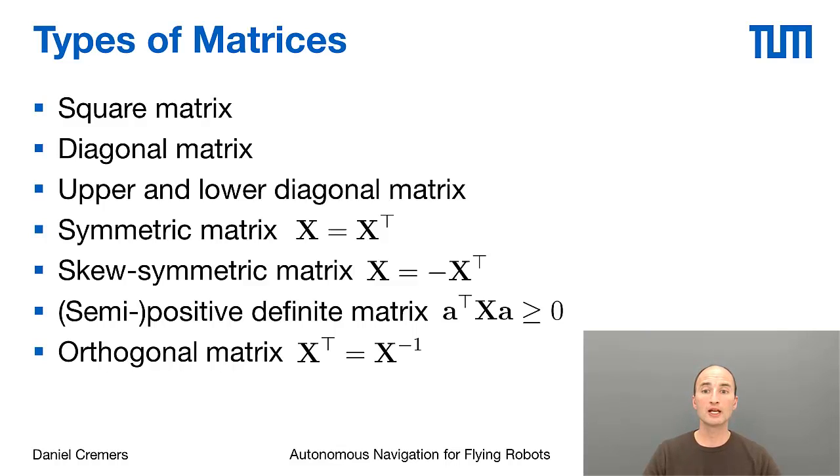Furthermore, we have symmetric matrices. These are matrices where the transpose is equal to the matrix itself. The transpose is obtained by mirroring along the diagonal, and so that leaves the matrix unchanged for symmetric matrices, in contrast to so-called skew-symmetric or anti-symmetric matrices, where transposing the matrix gives you the negative of that matrix. Then we have positive definite or positive semi-definite matrices. A positive definite matrix is a matrix X such that for any vector a, the quadratic form a^T X a is always positive, and positive semi-definite if it is always non-negative.